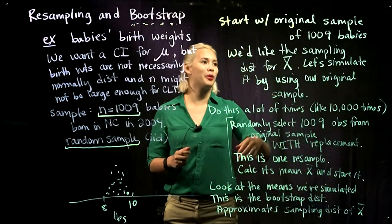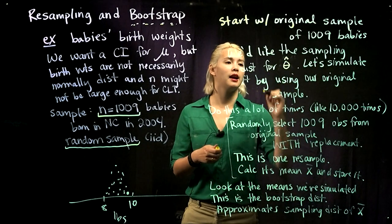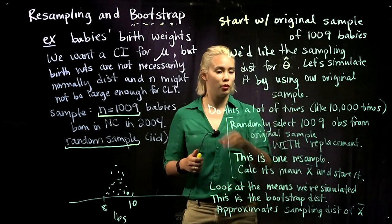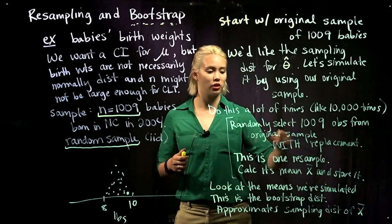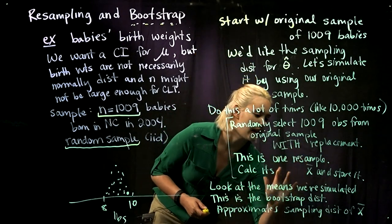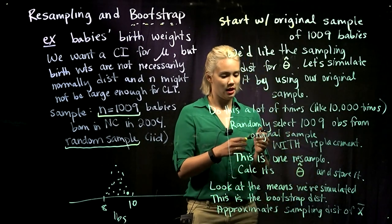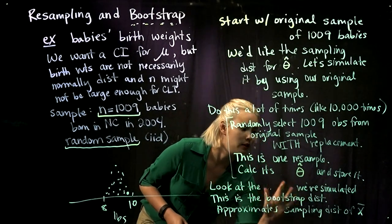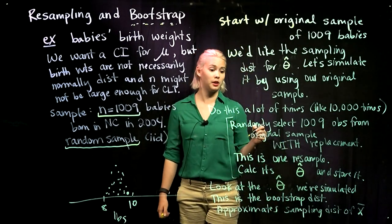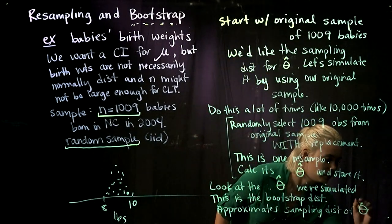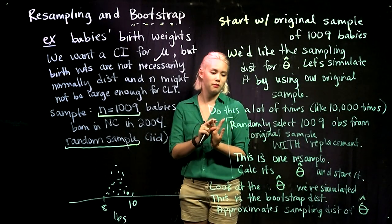More generally, if we wanted to create a sampling distribution for any statistic, say we have some statistic theta-hat and we want its sampling distribution, we would do this same procedure. We would randomly select 1,009 observations to create our resample, calculate that sample's theta-hat, and store it. Looking at all of the theta-hats we've simulated gives us a bootstrap distribution, which approximates the sampling distribution of theta-hat. Theta-hat could be the mean, variance, standard deviation, or whatever statistic you're interested in.